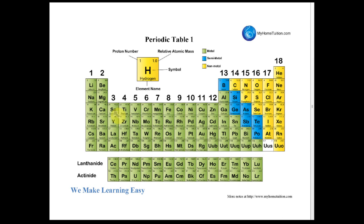Since these elements had no names, he called them eka-boron, eka-aluminium, and eka-silicon. 'Eka' means 'next,' so eka-silicon means the element next to silicon, and eka-aluminium means the element next to aluminium in his periodic table. Strontium was below boron, so he called it eka-boron.